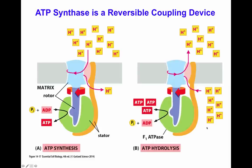The ATP synthase is a molecule able to rotate in different directions depending on the need of the protein. When using the proton gradient to generate ATP, the protons move through the molecule and the kinetic energy generated by the gradient is transformed into chemical energy generating ATP. However, the molecule is also able to hydrolyze ATP, and by hydrolyzing ATP it can pump protons against their concentration gradient, working as a proton pump.